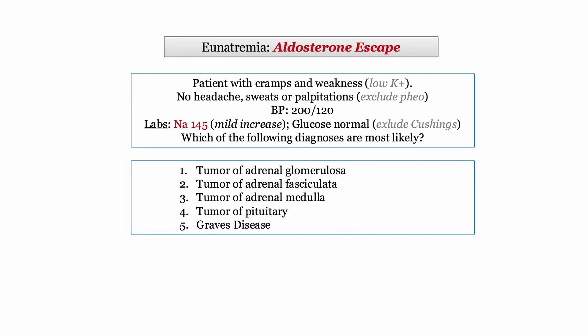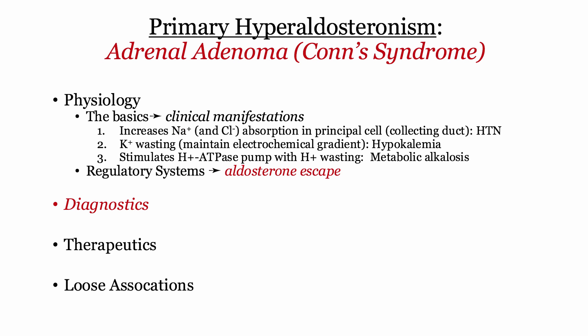To review this vignette: they give you a patient with cramps and weakness, i.e., low potassium. They exclude pheochromocytoma as a cause of hypertension with a negative review of systems. The blood pressure is very high, and then comes the data — a mild increase in sodium and a normal glucose, essentially excluding Cushing's in this scenario. The most likely cause of this presentation is an adrenal adenoma involving the glomerulosa.